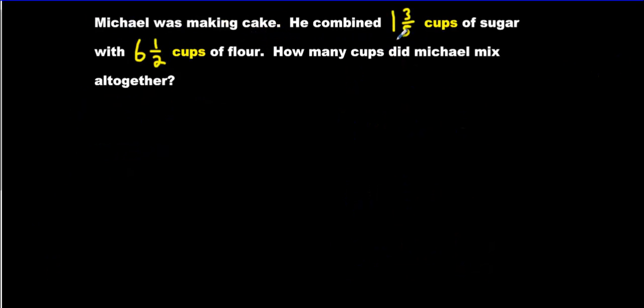Michael was making a cake. He combined 1 and 3 fifths cups of sugar with 6 and a half cups of flour. How many cups did Michael mix all together? What are we doing over here? Are we doing multiplying? Are we dividing? Well, Mr. Malam, I know what to do here because we're breaking things up. No, we're not. We're putting things together. Okay, that's fine. So Mr. Malam said if you put things together, that must mean we're multiplying because multiplying makes more.